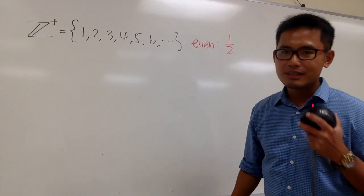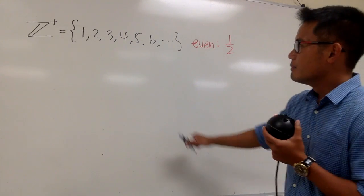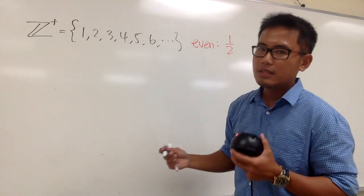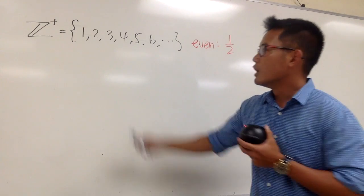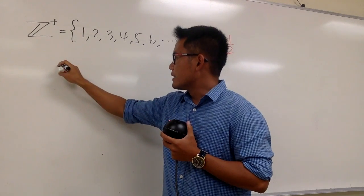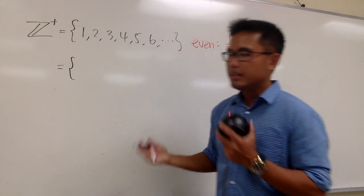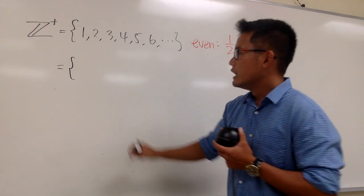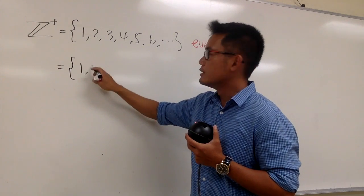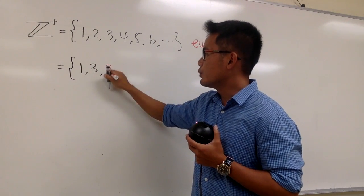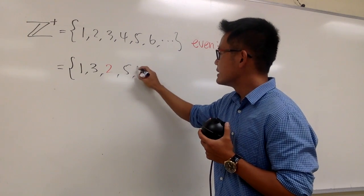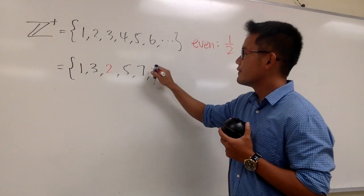You should agree with me that this is a way to list out all the positive integers: 1, 2, 3, 4, 5, 6, 7, 8, 9, so on. Now, how about if I take a look at the set of integers this way? Let me put down 1, then 3, then 2 — and then I'll put down 5, then 7, then 4.